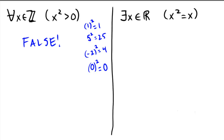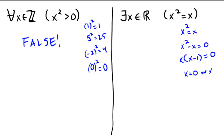So did you get the left-hand side false? Hopefully you did. On the right-hand side, we have: there exists an x in the real numbers such that x squared equals x. A little algebra: x² = x means x² - x = 0, which means x(x - 1) = 0. The zero product property says x could be 0 or x could be 1. Both 0 and 1 satisfy the statement. So does there exist a real number that makes it true? Sure — in fact, there exist two numbers that make it true, both 0 and 1. Therefore, this statement on the right is true.